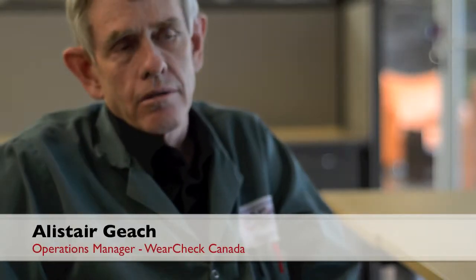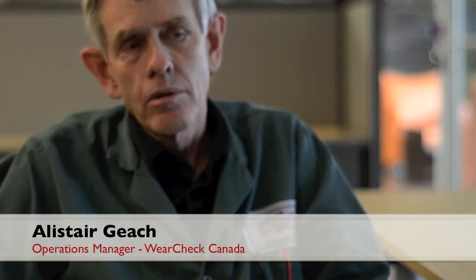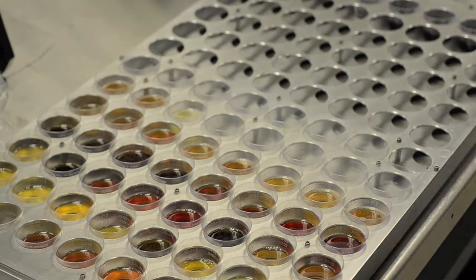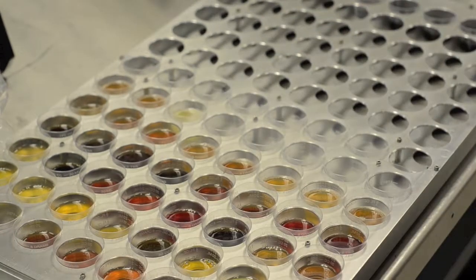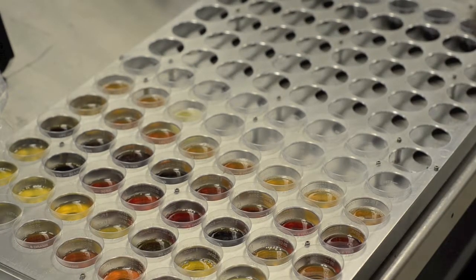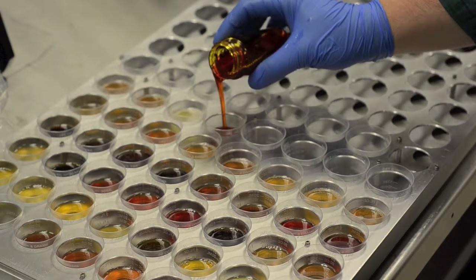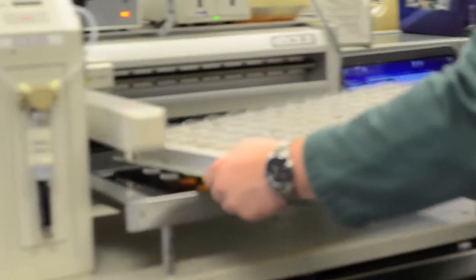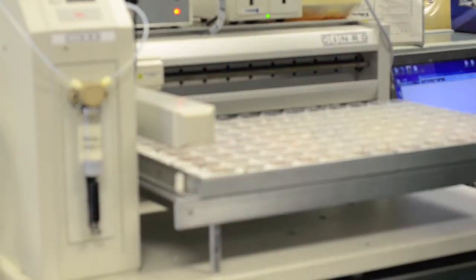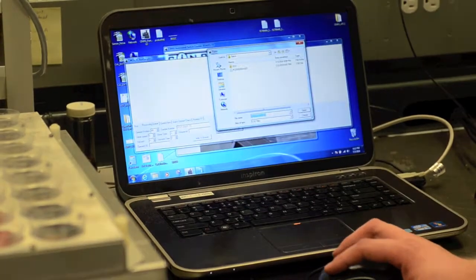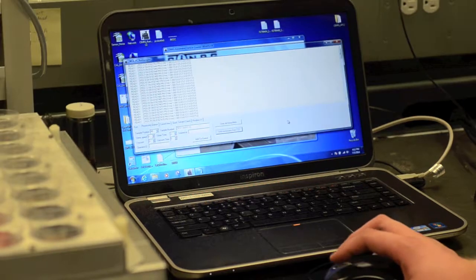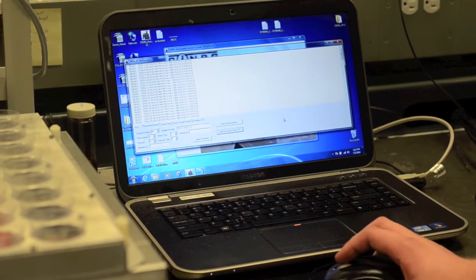The samples are poured into sample cups after having been homogenized. Typically, 15 mils is poured into the cup. You can change the volume based on the viscosity or the thickness of the sample. A completed tray is put onto the system. The batch file is loaded into the software. And then the run is initiated.